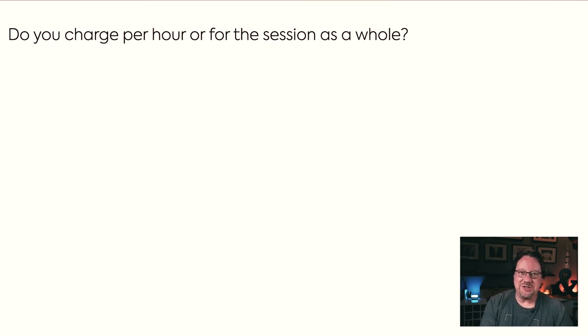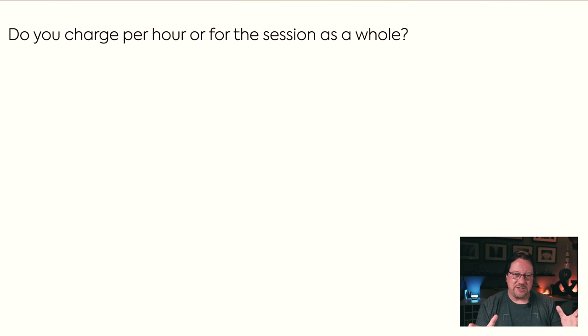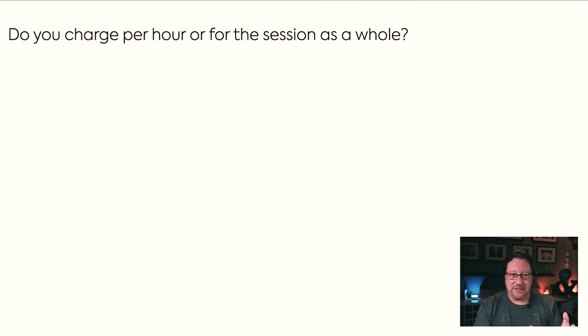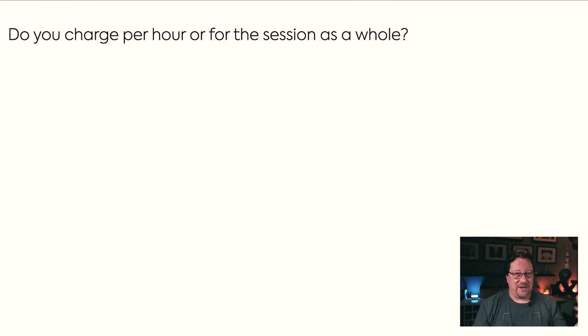Do you charge per hour or for the session as a whole? I charge by the session. I calculate an approximate number of hours, multiply by what I need per hour, and that becomes my session price. There are worksheets to calculate your hourly rate if you were working for yourself. It's surprising how much you need to charge — near Seattle, working for yourself full-time starts at about $100 an hour, making a half-day gig $400 or more. The best pricing advice I've ever heard: you're not pricing your photography for you. Price for the market, for your clients — it's probably a bigger number than you think.